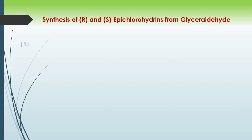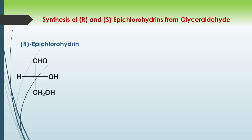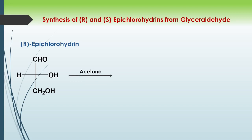So let's start the synthesis of R and S epichlorohydrin from glyceraldehyde — first the R-epichlorohydrin. Here is the structure for the glyceraldehyde molecule. In the first step we use acetone in the presence of acid. When acetone and acid are used on a diol molecule, there is protection of the diol and we get the ketal as the product.